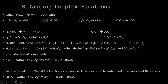Step two: balance the metals. Manganese — one on each side, that's good. Carbon — two carbons on the left, one on the right, so double the carbons to get 2CO₂. Step three: add water to balance oxygens. There are four oxygens in MnO₄⁻ and zero on the right, so add four waters to the right. For the oxalate half-reaction: two times two is four oxygens — no water needed.